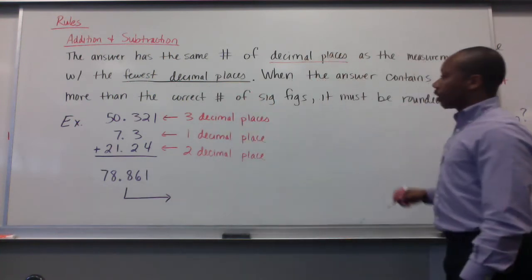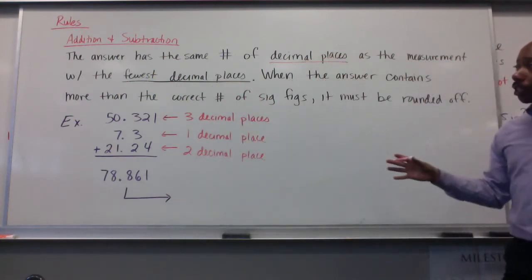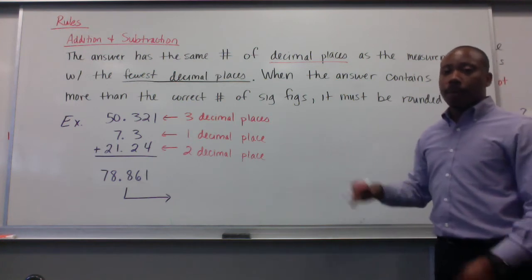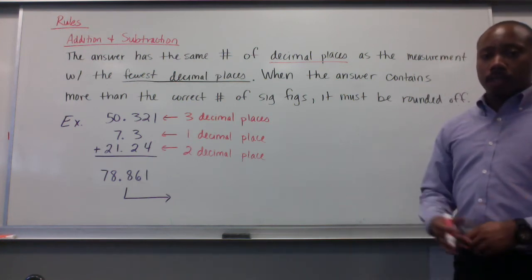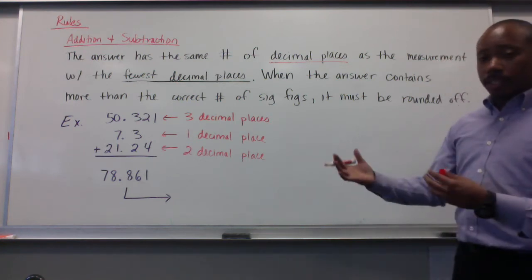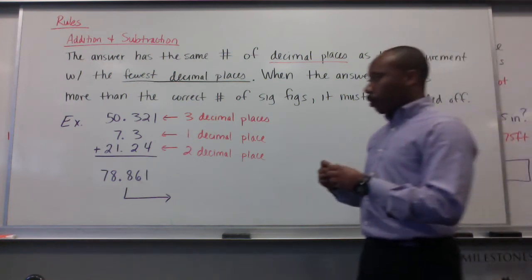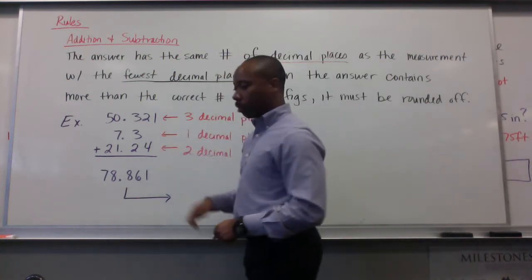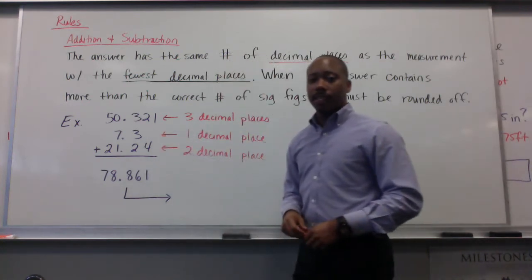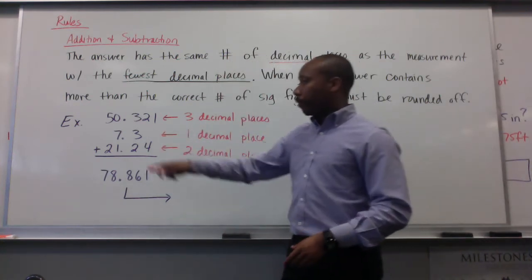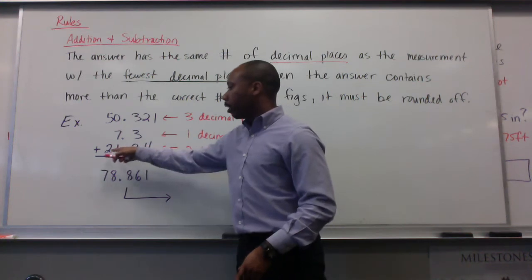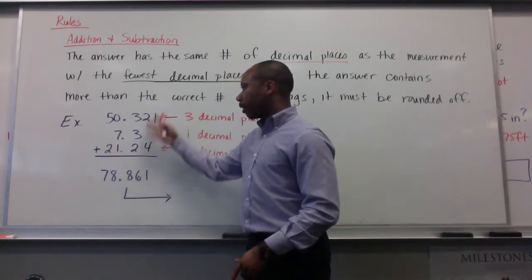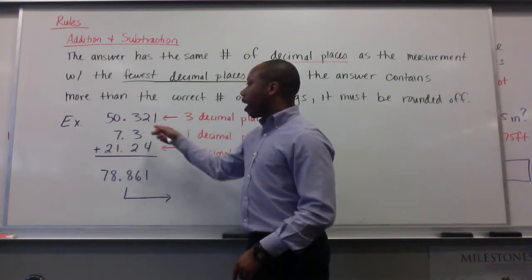When the answer contains more than the correct number of significant figures, it must be rounded off. Here's an example. We have these three numbers being added together: 50.321, 7.3, and 21.24.